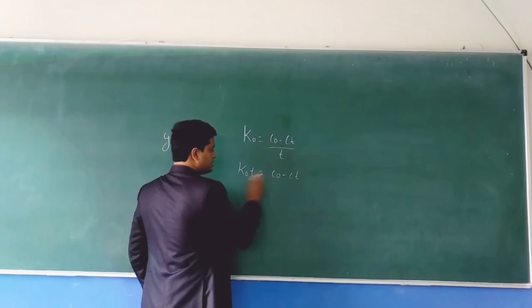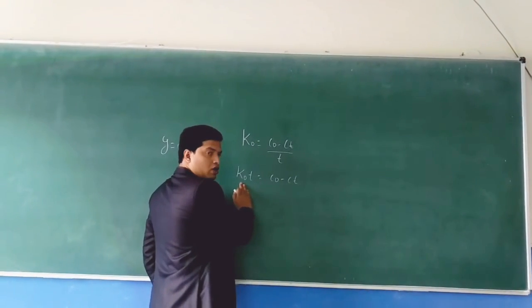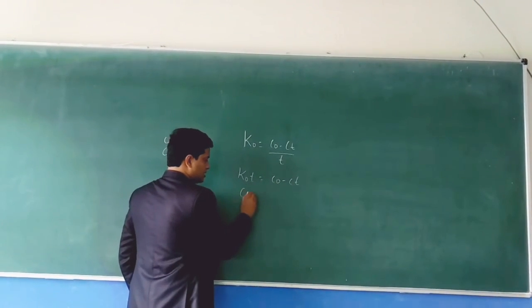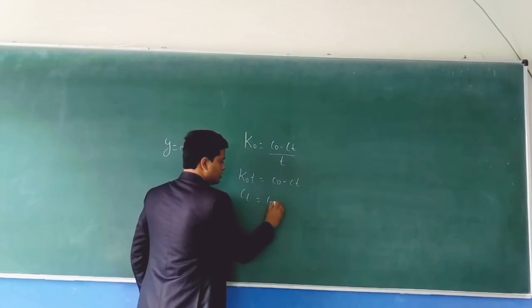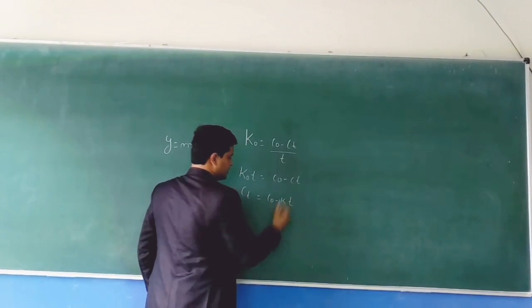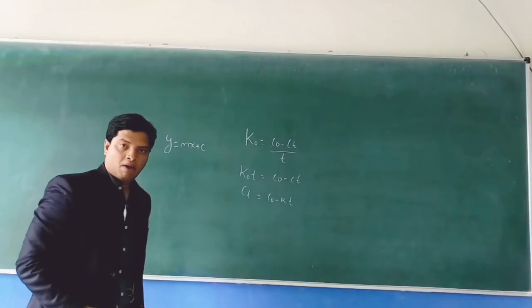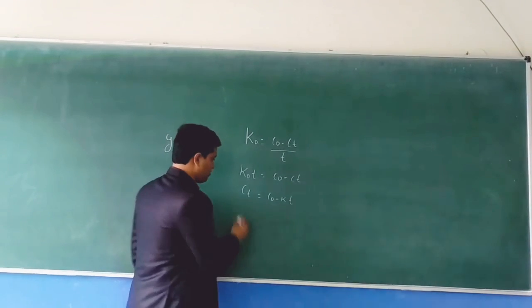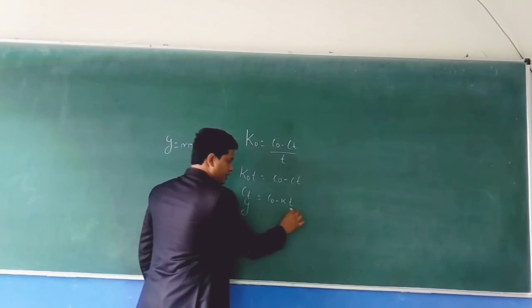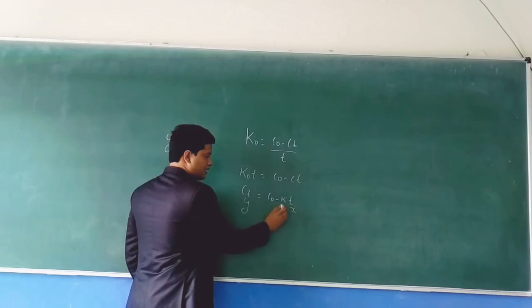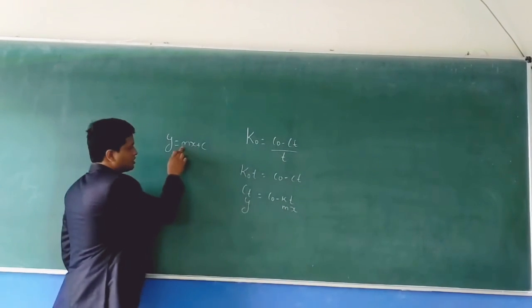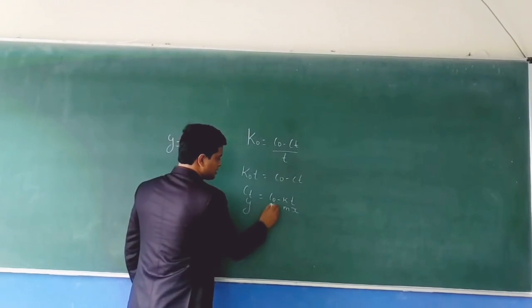Take Ct to this side and send the rate constant and time to that side. You will get Ct equals C naught minus kt. Now it is in the form y equals mx plus C. Here, the y-axis is Ct, the x-axis is t, whatever is present beside x is m, and the remaining is C.